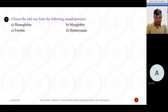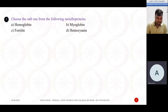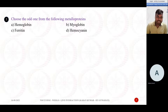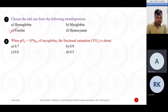Choose the odd one from the following metalloproteins: hemoglobin, myoglobin, ferritin, and hemocyanin. The odd one is ferritin. Hemoglobin, myoglobin, and hemocyanin all contain iron, but ferritin actually stores more than one iron atom and is distinct from the others in that regard. The odd one out is ferritin.